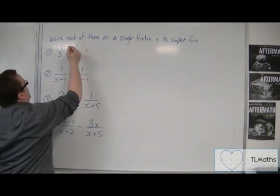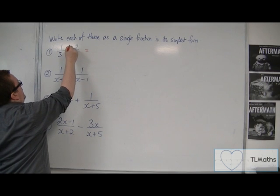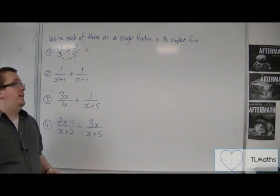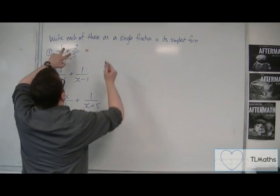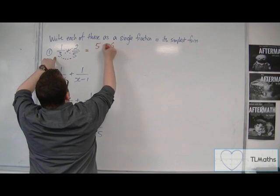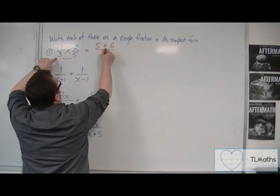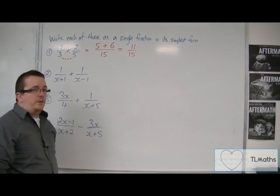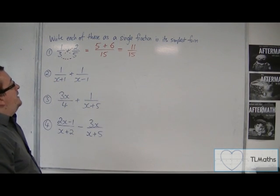So we want 1 times 5 plus 2 times 3 over 3 times 5. That's the method I'm going to be using. So 1 times 5 plus 2 times 3 over 3 times 5. And so this would be 11 fifteenths. So that is in its simplest form.